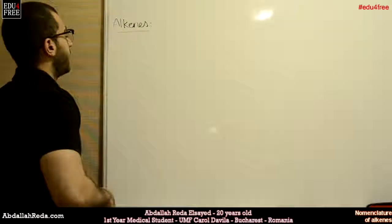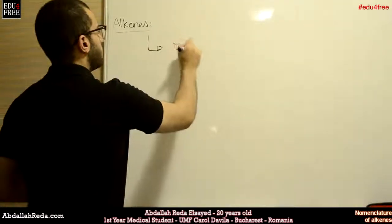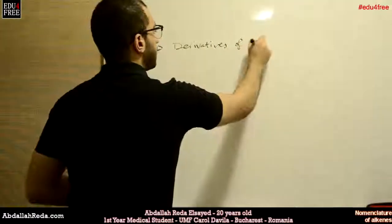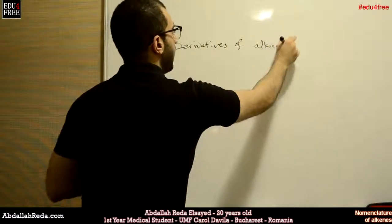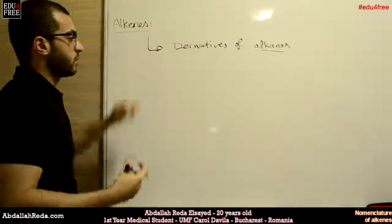The first thing we need to know is that alkenes are actually derivatives of alkanes. So alkanes is the starting point, and then we get to alkenes. Why?